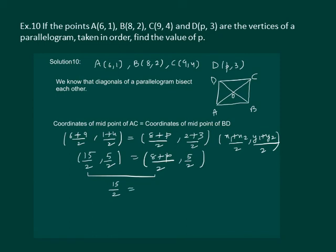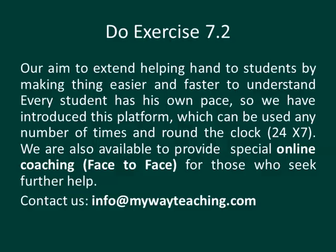Equating the x-coordinates, 15/2 = (8 + P)/2, which gives P = 7. Hence, we have found the value of P to be 7. Thank you.